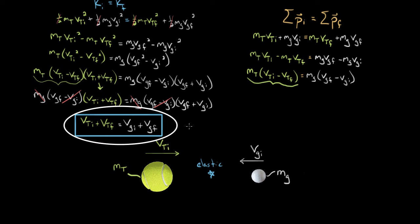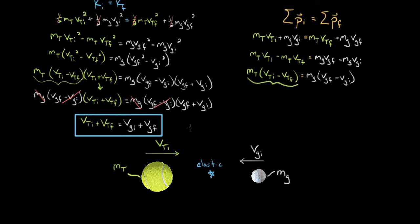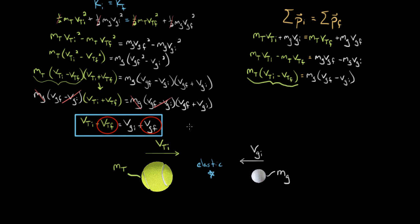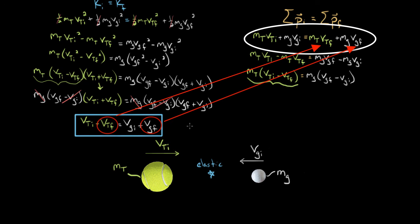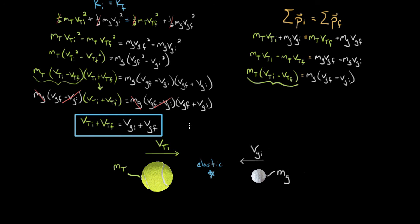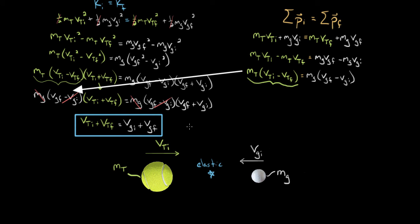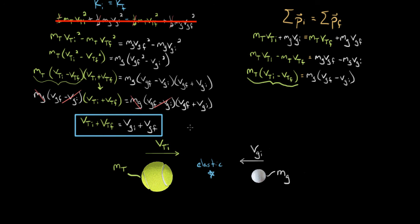This is incredibly useful because we can now use this simple linear expression instead of conservation of kinetic energy. Conservation of kinetic energy was causing all the problems because it involved squared speeds, leading to nasty algebra when substituting. Now we solve for one unknown velocity in this simple equation and plug it into conservation of momentum — no squaring, much cleaner, much less prone to algebra errors. In the next video, I'll show an example of how to use this to quickly find the final velocities in an elastic collision.